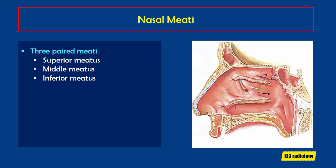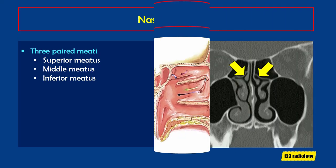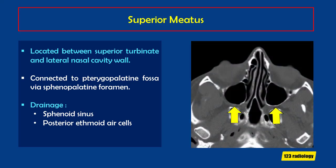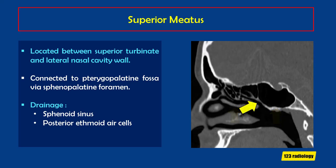The inferior meatus receives drainage from the nasolacrimal duct. The superior meatus is located between the superior turbinate and lateral nasal cavity wall, and it is connected with the pterygopalatine fossa through the sphenopalatine foramen. It receives drainage from the sphenoid sinuses and posterior ethmoid air cells, as can be seen on this sagittal cut.